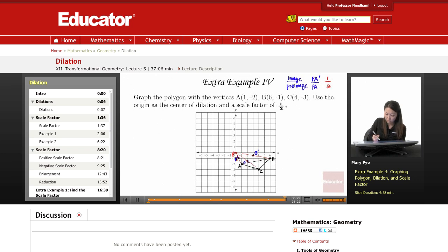So my new image is from here to here to here. So all we had to do was just graph it, graph the polygon, and then use the origin as a center and a scale factor of 1 over 2.